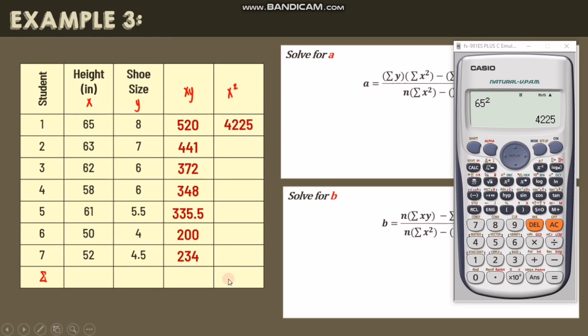And then 63 squared, so we have 3,969. And 62 squared, we have 3,844. And so on.